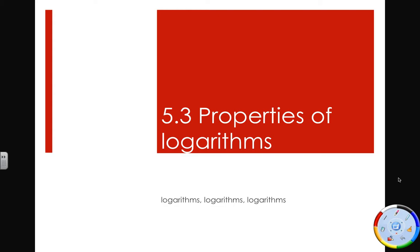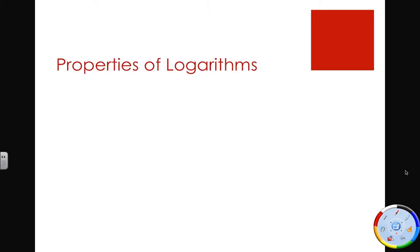Welcome to section 5.3 — the properties of logarithms. This ends up being a kind of confusing lesson, but there are strict rules to follow, and as you follow them every time, you will always get it right. These base properties work for all logarithms: log base 2, log base 5, log base 10, log base e, log base b — any logarithm. All of these properties remain constant no matter which log you're working with.